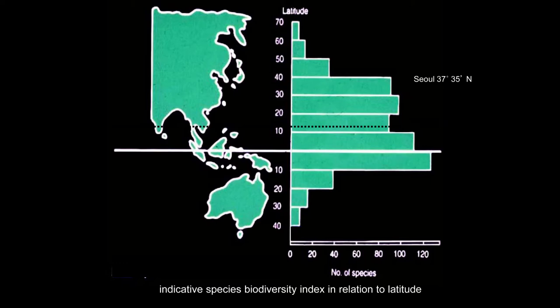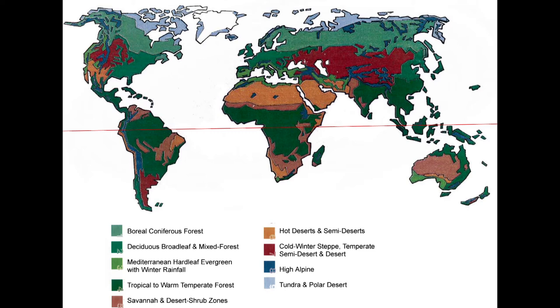Whenever we look at a site for the first time, we look at its latitude, we find out where it is, and look at its level of biodiversity. This is a diagram that shows that level of biodiversity is more intensive at the tropical areas, and as you head upwards, it gets less and less biodiverse. These are the different regions of the Earth with different ecology, and so these are the two factors to look at when we start designing.